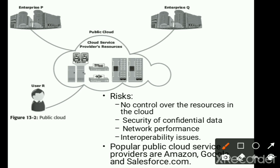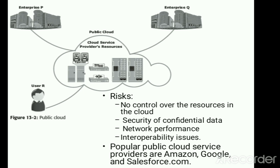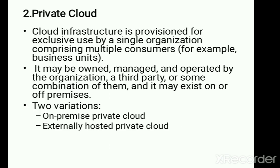The problem with the public cloud is that there is no control over the resources. Confidentiality is one problem, network performance is also a problem, and interoperability issues can arise in some cases. The best examples are Amazon Web Services, Microsoft Azure, and Salesforce.com.